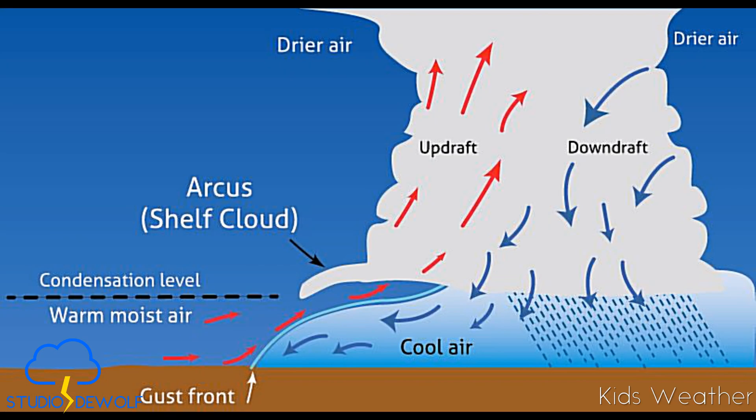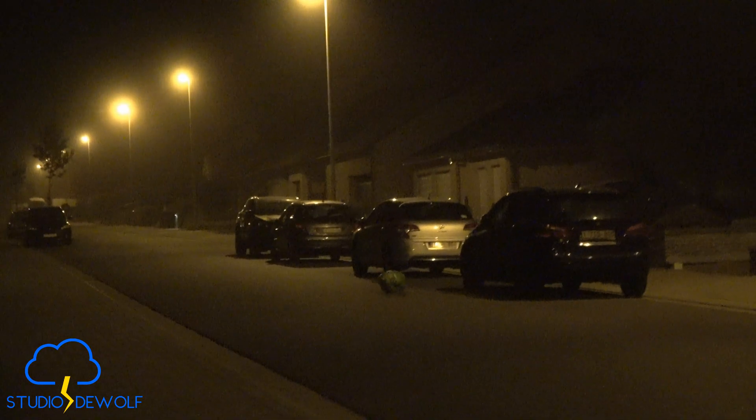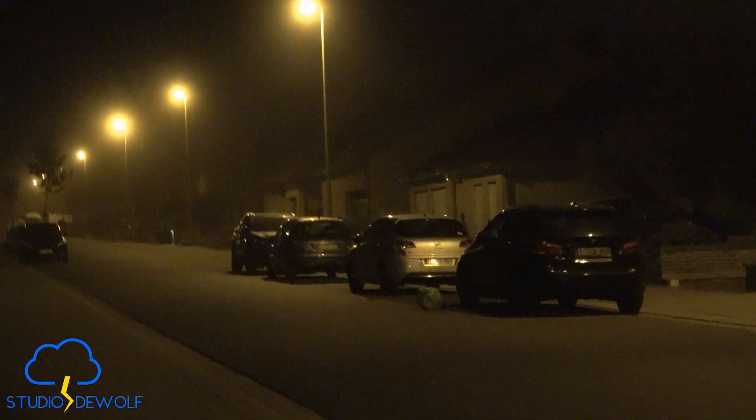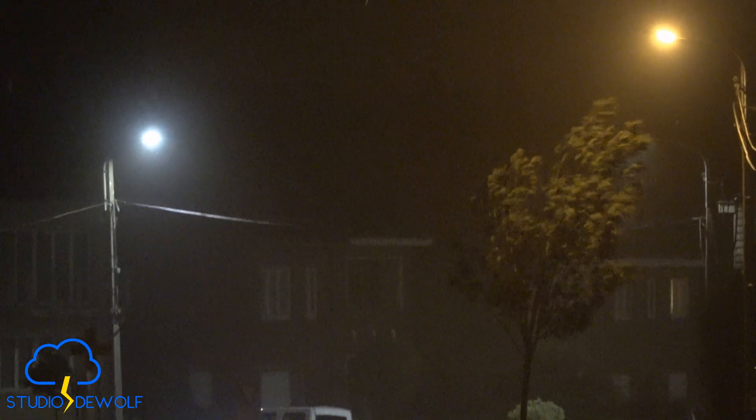A shelf cloud forms at the leading edge of a thunderstorm where cold air from the storm spreads outward. This can produce sudden, powerful wind gusts — strong enough to break branches, damage roofs, or affect vehicles.